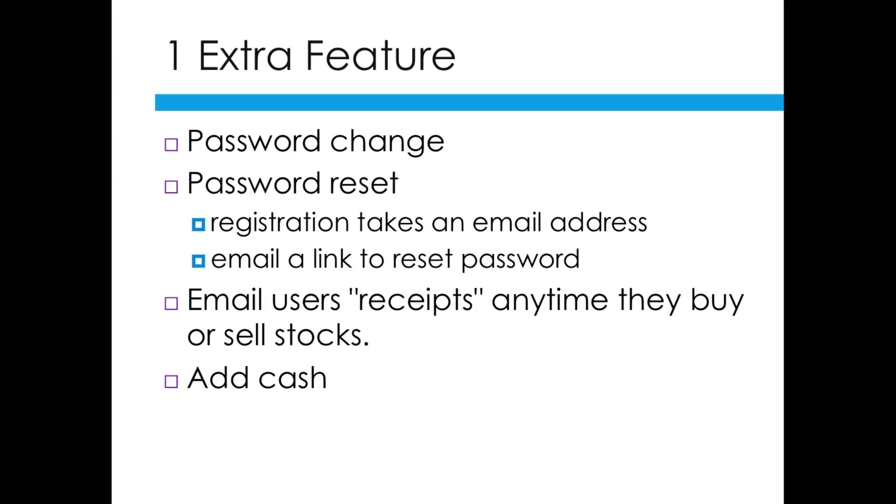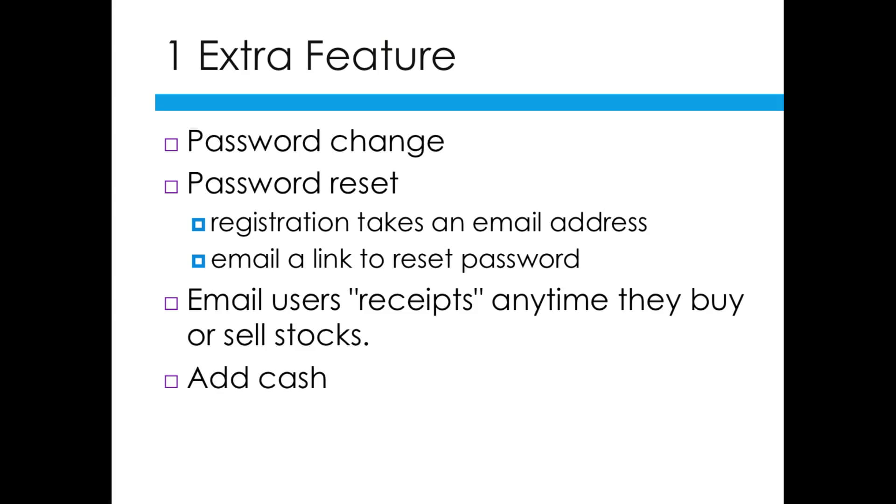Once you've implemented all of those, you also need to implement one more extra feature. This can either be allowing a user to change their password or reset their password if they've forgotten it. For the password reset, you'll probably also want to edit register so that it allows them to specify an email. You can also have something that allows users to get receipts every time they buy or sell something, and finally allow them to add cash to their account.